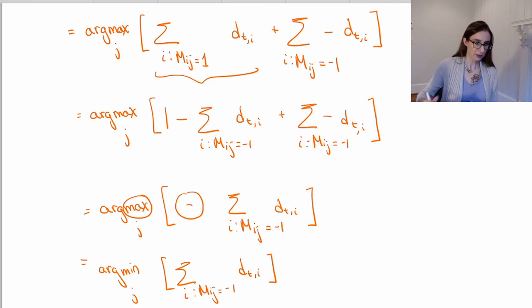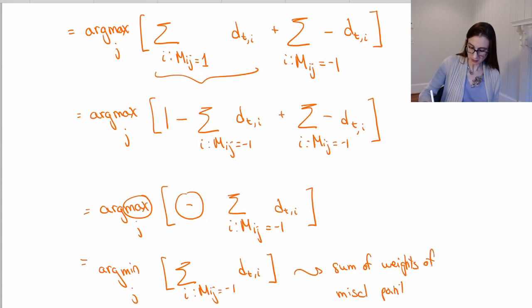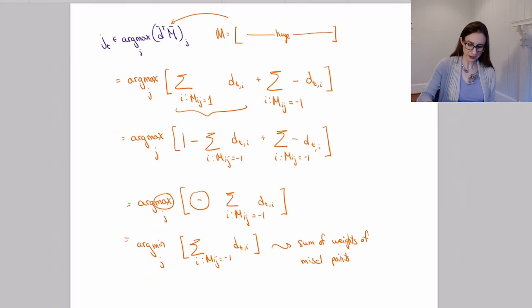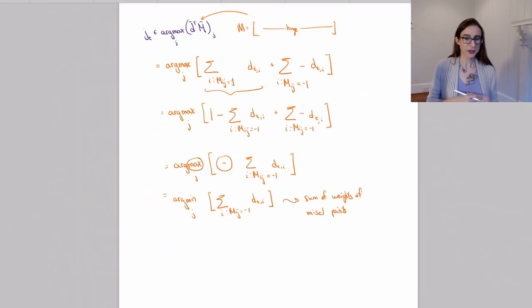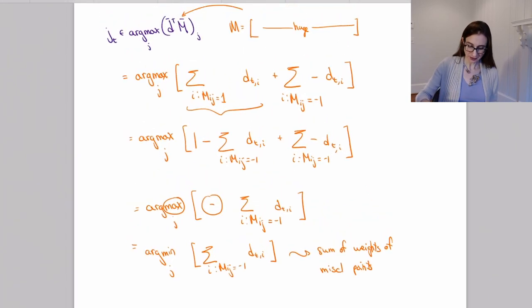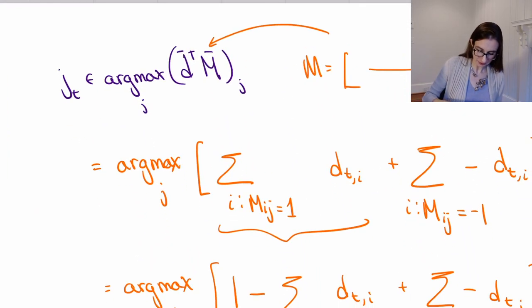So if you think about this, this is the sum of the weights of the misclassified points. Now, what is the weak learning algorithm supposed to do again? It's supposed to minimize the sum of the weights of the misclassified points. So this is exactly the job of the weak learning algorithm.